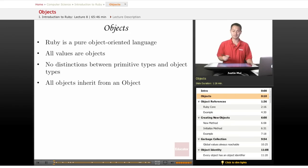Objects are a pure object-oriented language. What happens is everything in Ruby is an object as we've gone through in other lessons. All values are objects and there's no distinction between primitive types and object types.